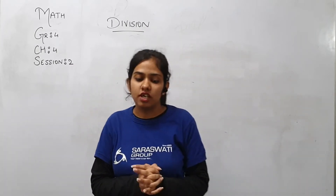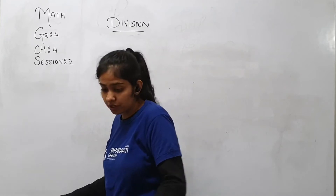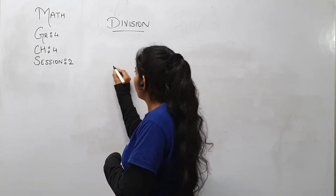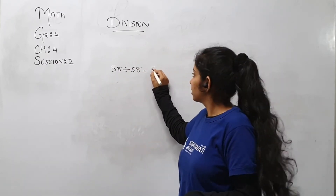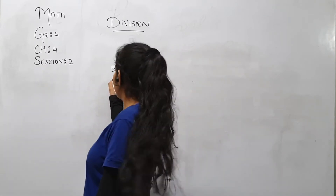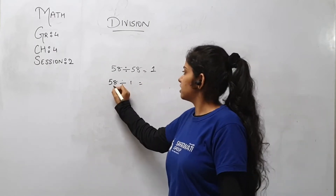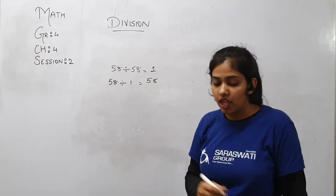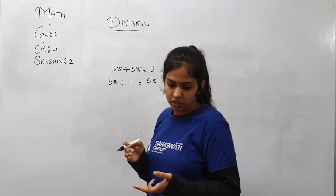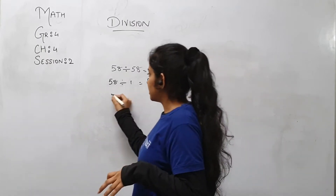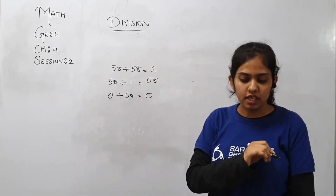What are the division facts? When any number is divided with the same number, for example, when 58 is divided by 58, your answer will be 1. Then afterwards, when any number is divided by 1, then your answer is the number itself, that is 58. Then afterwards, 0 divided by any non-zero number results in 0. If 0 is divided by some non-zero number, then your answer will be 0.